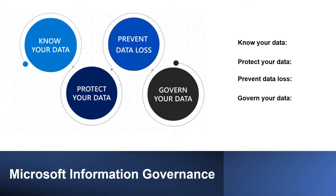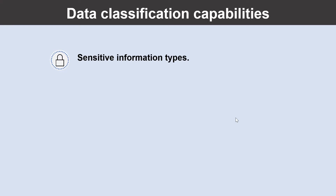Capabilities such as data loss prevention policies and endpoint data loss prevention enable organizations to avoid data loss. The final step is to govern your data. Organizations can automatically keep, delete and store data and records in a compliant manner. Capabilities like retention policies, retention labels and records management enable organizations to govern their data.